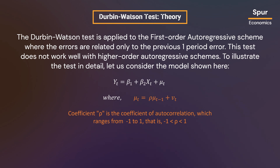The Durbin-Watson test is applied to the first-order autoregressive scheme, where the errors are related only to the previous one-period error. This test does not work well with higher-order autoregressive schemes. To illustrate the test in detail, let us consider the model shown here. Y is the dependent variable and X is the independent variable. The error term mu is a function of the previous one-period error — that is, mu t minus 1.